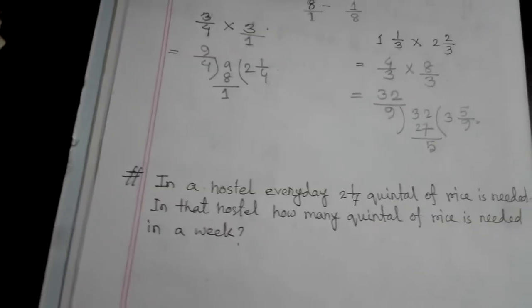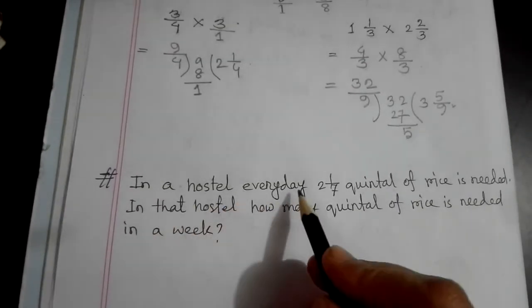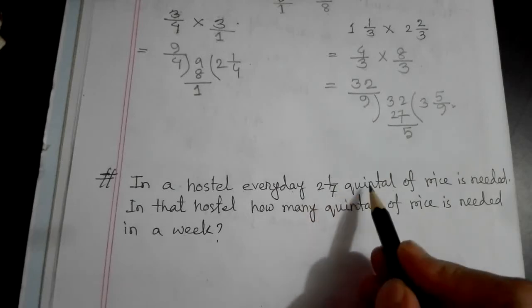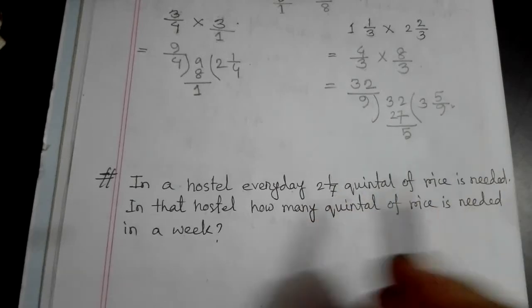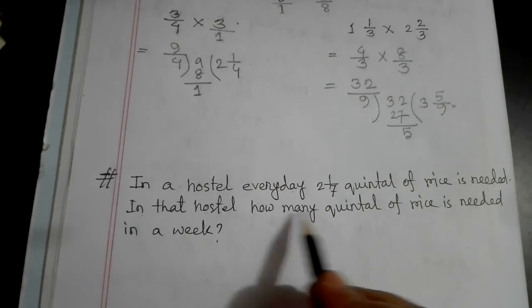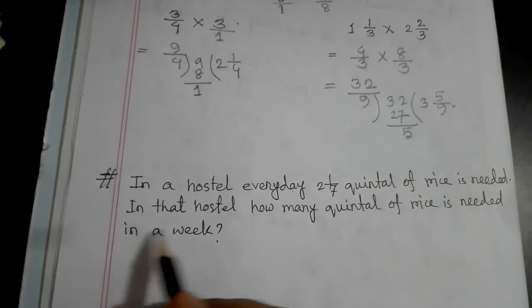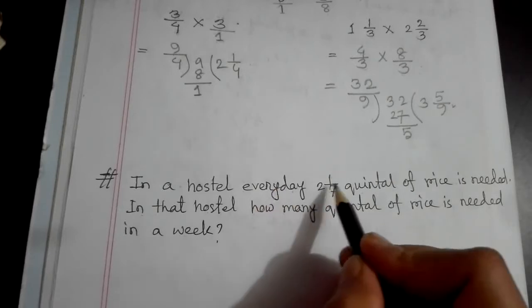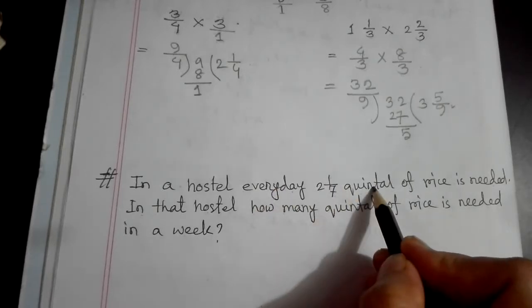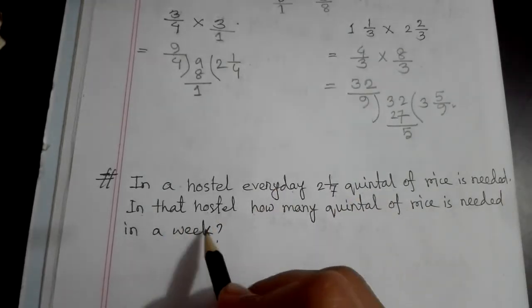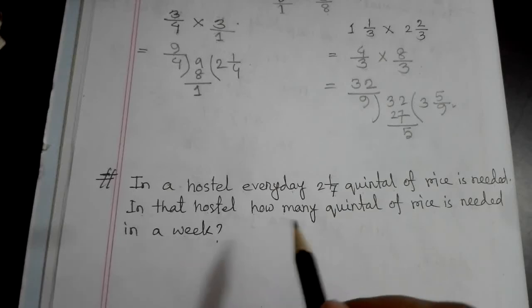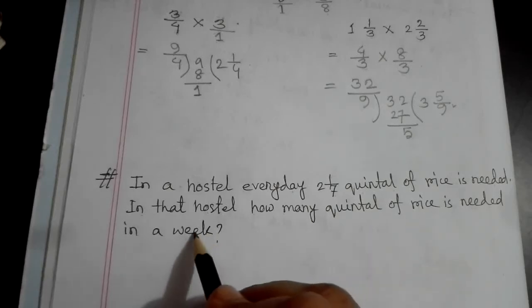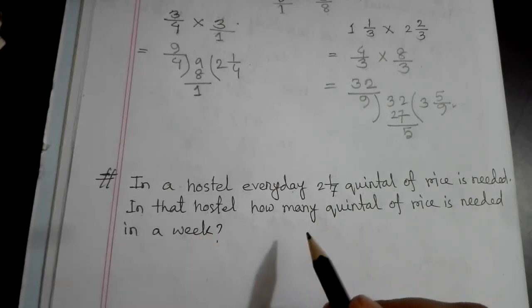Now let's solve a multiplication problem. In a hostel, every day 2 whole 1 by 7 quintal of rice is needed. In that hostel, how many quintal of rice is needed in a week? Every day we need 2 whole 1 by 7 quintal rice. We have 1 week, which means 7 days. How many quintal of rice is needed?